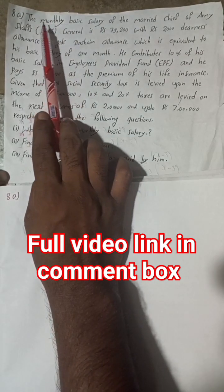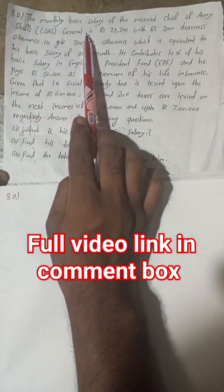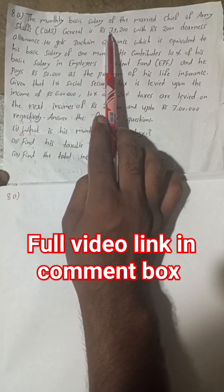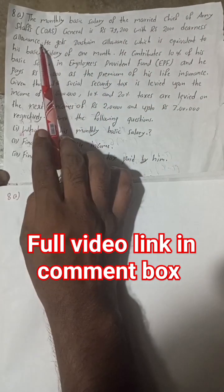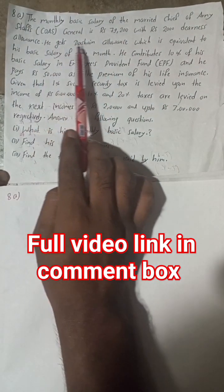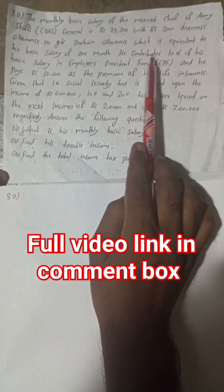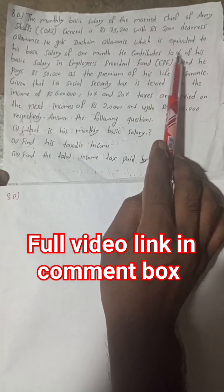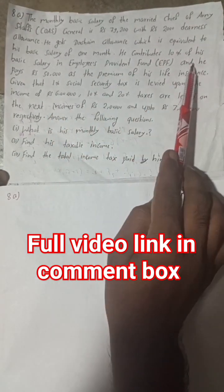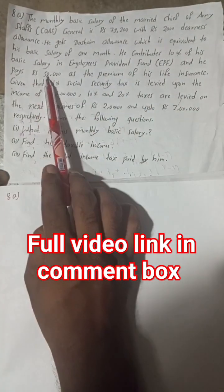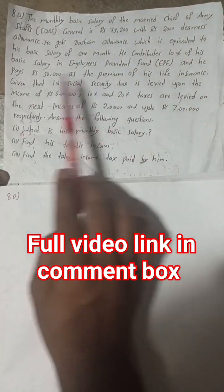The monthly basic salary of a married chief of army staff general is Rs 79,200 with Rs 2,000 dearness allowance. He gets a Dasai allowance equivalent to one month's basic salary. He contributes 10% of his basic salary to the Employees Provident Fund and pays Rs 50,000 as the premium of his life insurance.